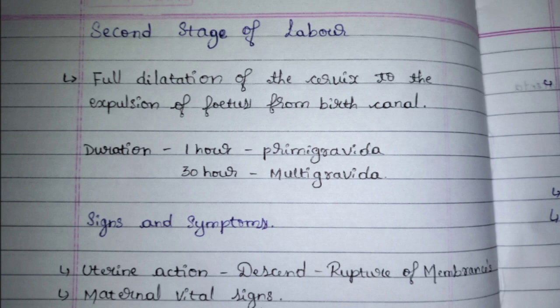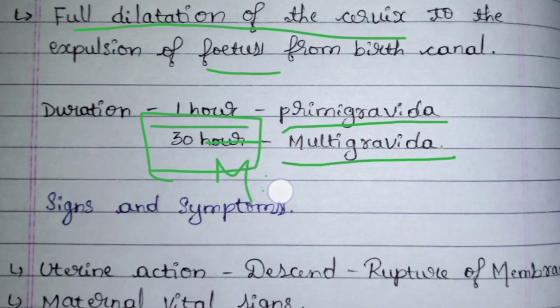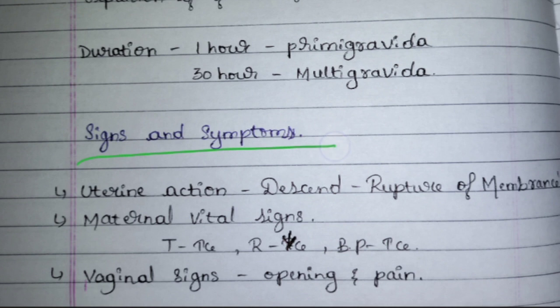The second stage of labor: from full dilation of the cervix to the birth of the fetus — when the cervix starts to open up until childbirth. In this stage the child is born. For primigravida, the duration is 1 hour; for multigravida, it is 30 minutes.